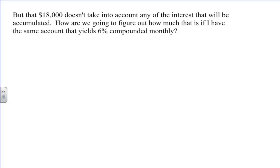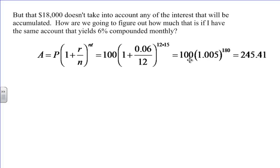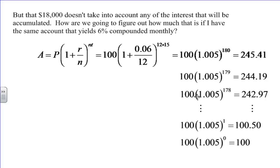So what would happen if I figured this out and compounded it monthly? Well, my first payment of $100 is going to sit in the bank for 180 months, and that $100 is going to turn into $245.41. Now, my second $100 payment is actually going to turn into $244.19 because it's only sitting in the bank for 179 months. Then I'm going to keep doing this over and over again, 178 months, and then we keep going all the way down to one month and then zero months. And what this has done is created a geometric series.